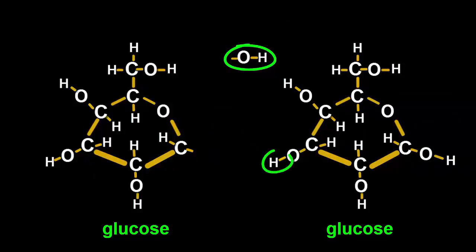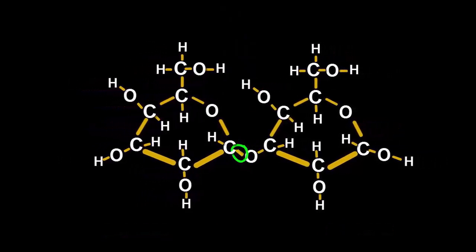Inside the plant, enzymes can then extract a water molecule from two of these monosaccharide glucose molecules and join them together to form a disaccharide, maltose.